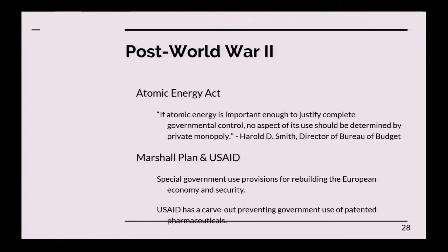The Marshall Plan in the late 1940s — codified in 1951 — had a special government use provision for rebuilding European economy and security. In 1961, Congress created USAID to consolidate the functions of the various agencies that had been doing work under the Marshall Plan, and that had a similar government use provision. It also had a carve-out preventing government use of patented pharmaceuticals outside the United States. Both statutes had a special provision allowing the agency head to negotiate with the patent holder before filing suit in court.